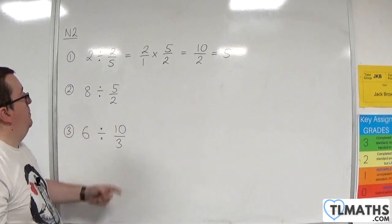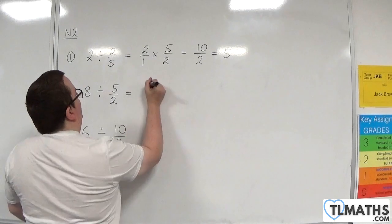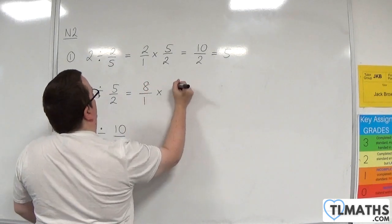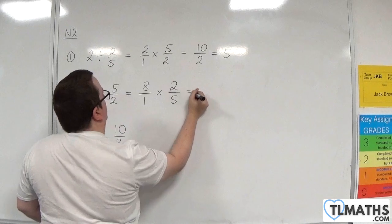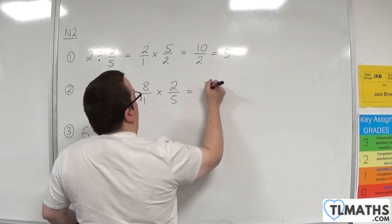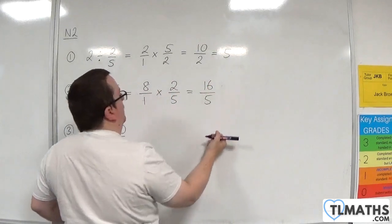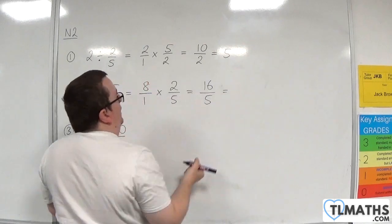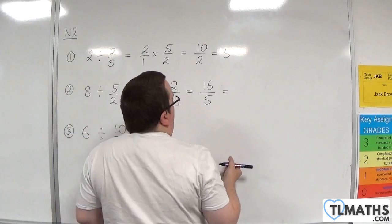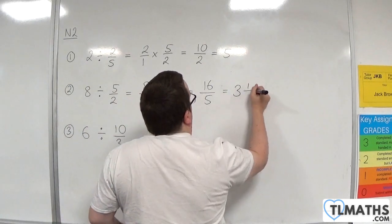Number 2, 8 divided by 5 halves. We could write that as 8 over 1 times 2 over 5. 8 times 2 is 16, 1 times 5 is 5. You could write that as 16 over 5, or as a mixed number, 3 and 1 fifth.